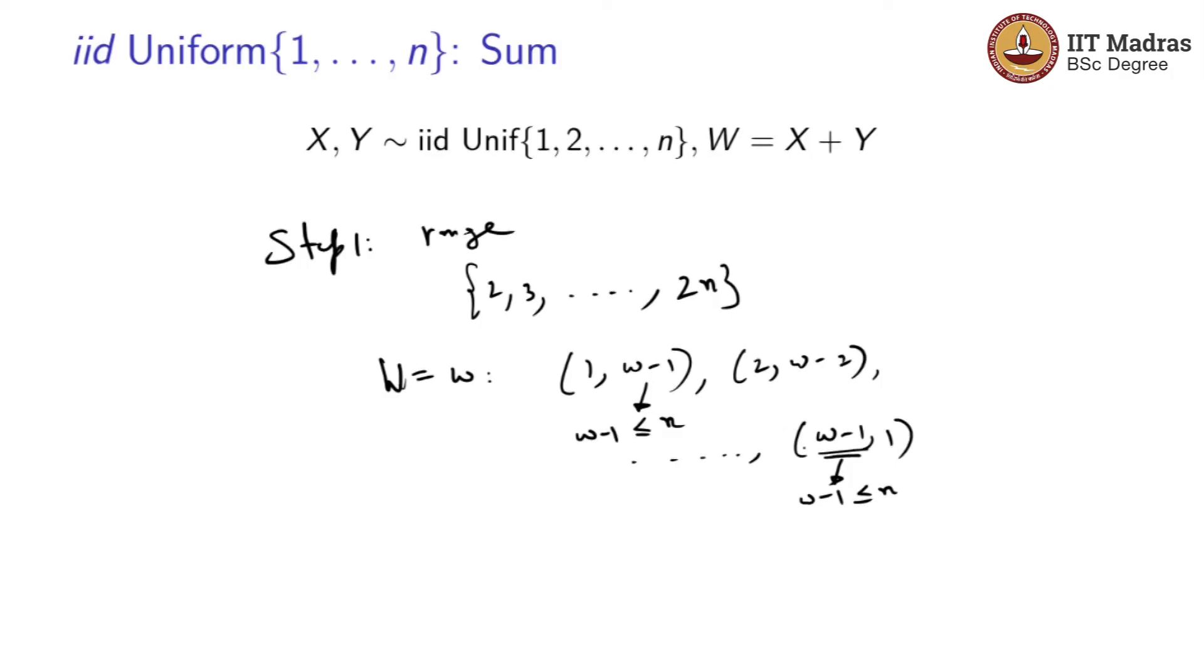If w minus 1 goes above n, then these possibilities will not occur. You have to be very careful when you do this. As you go from W equals 2, 3, so on, you will keep on adding. But you can go all the way up to n plus 1, and when you go beyond n plus 1, the number of possibilities will decrease again. You have to account for that very carefully.